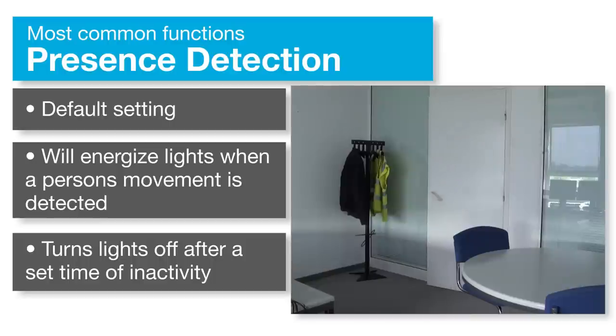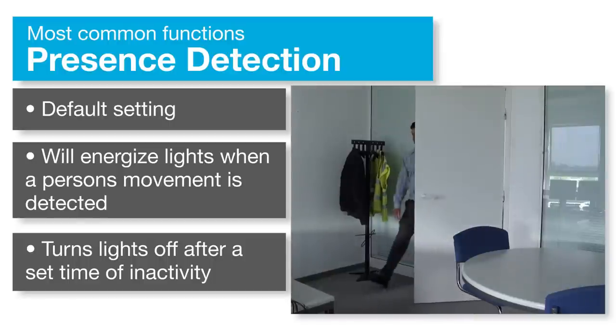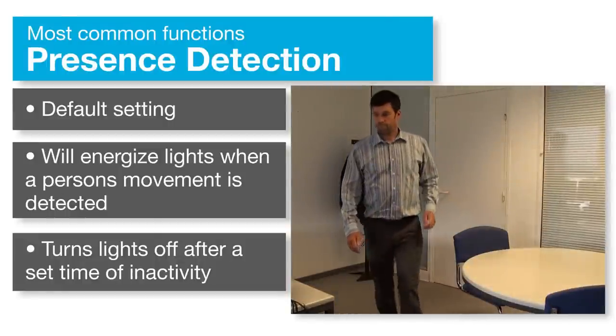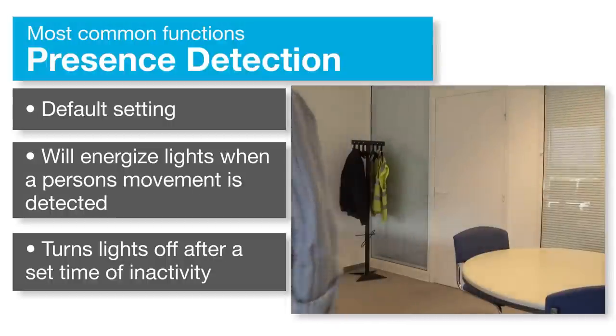The main function and default setting is Presence Detection. This means that the sensor will turn the lights on when movement is detected and will also turn the lights off after the room has been empty for a set length of time.